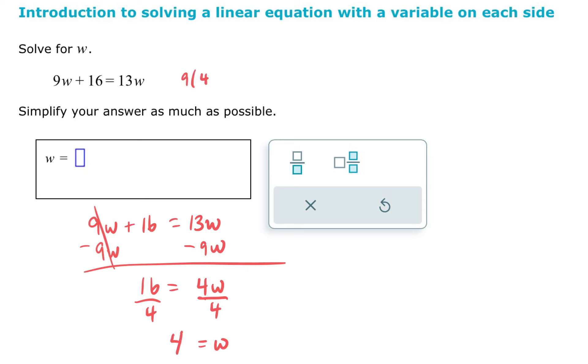Substitute. We have 13 times 4. 9 times 4 is 36. 36 plus 16 is 52. And 13 times 4, we can confirm, is 52. So we have checked, w equals 4.